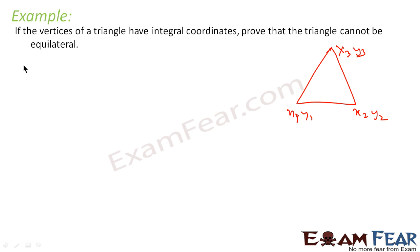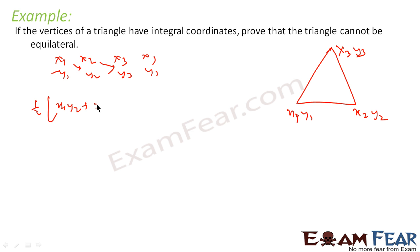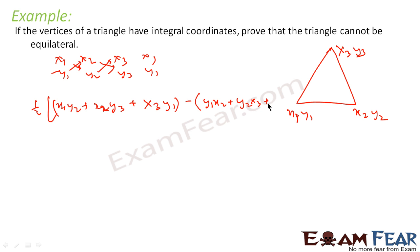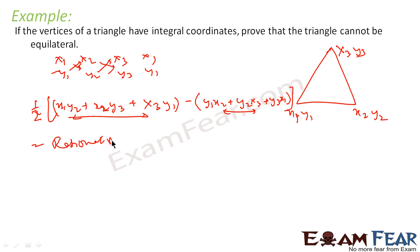The area of this triangle from the coordinate formula — using the determinant method with x1, y1; x2, y2; x3, y3 — since all coordinates are integers, the products and differences are all rational numbers. Rational minus rational is rational, and dividing by 2 is also rational. So the area computed from integral coordinates is a rational number.